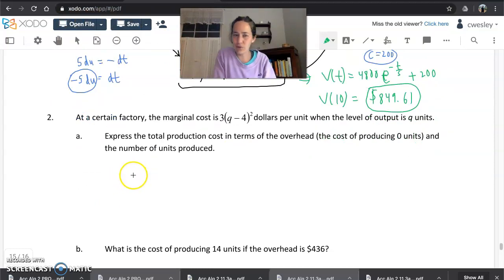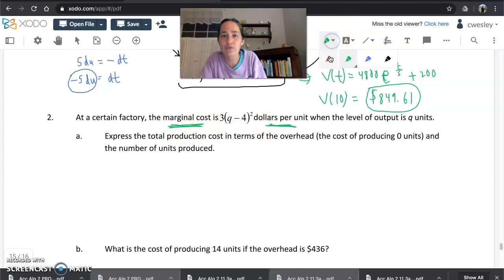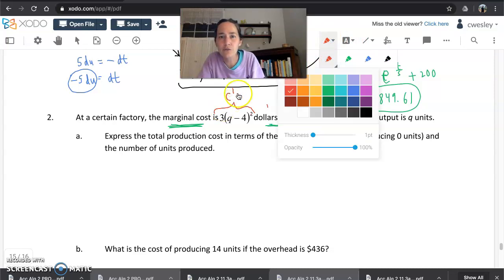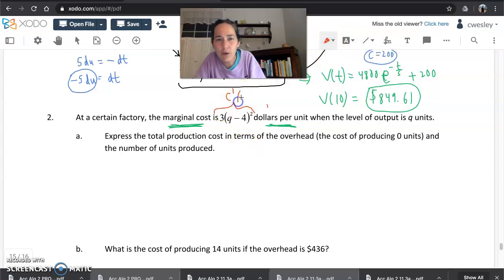All right. A certain factory. Wonder what they're producing. Marginal cost is this many dollars per unit. Do you already see two parts that indicate that this is going to be a derivative that's given that you're going to need to integrate? Marginal cost means rate of change in cost. It means derivative of cost. Dollars per unit are a dead giveaway for derivative units as well. Something per something. This thing, if we call it c for cost, this isn't c of q. This is c prime of q. This is the derivative of the cost with respect to q, which I think was the number of units.